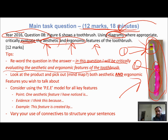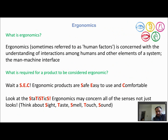I would suggest going through the PEE model — Point, Evidence, Explanation — and in an extended question like this, try to vary your use of connectives as you go through. In terms of aesthetics, we should be quite familiar with that: it's to do with the looks of the product. If something is positive in terms of aesthetics, you're saying it looks good; if it has poor aesthetics, there's something ugly or disturbing about the way it looks.